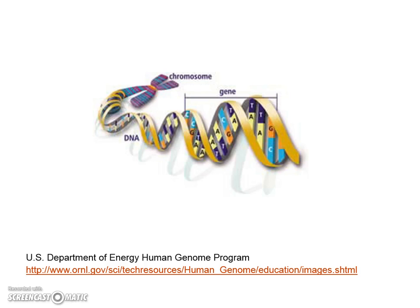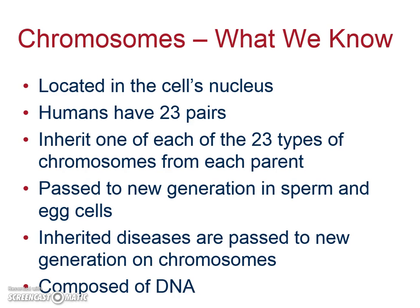We talked a little bit about the Human Genome Project. If you'd like to look at details about that program, a link is provided below. So what do we need to know about chromosomes? Where they're located, how many we have, and how the information is passed on. You should know that chromosomes are found in our nucleus — that's where our DNA is — and our DNA is folded into this complex structure called a chromosome.